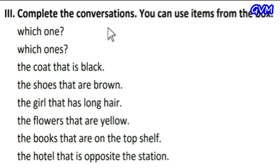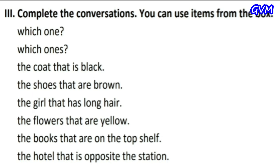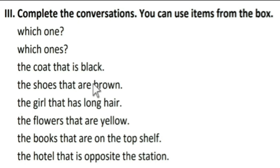Question number three: complete the conversation. Open your English grammar book to page 21 and look at question number three, also see the figure. The clues are: the coat that is black, the shoes that are brown, the girl that has long hair, the flowers that are yellow, the books that are on the top shelf, and the hotel that is opposite the station. Using these clues, we write the correct answers.